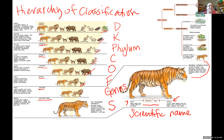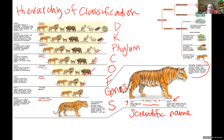Why don't we just use common names? Common names are subject to all kinds of confusing language differences, cultural differences, and regional differences. Scientific names are standard no matter what language you speak. My favorite example: when I was a kid, I called those little gray bugs that roll into balls 'potato bugs.' Here in California, people call them roly polies. It's the same organism — just a regional difference in the name.